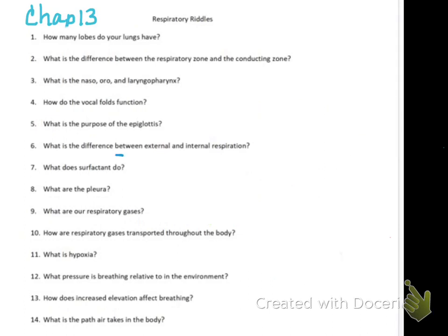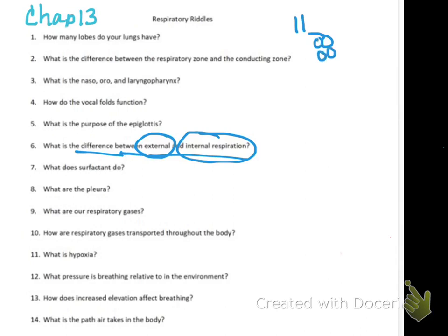The next question: what is the difference between internal and external respiration? Breathing is actually a four-step process. The first thing we have to do is physically get air into the body through the conducting zone - through the nose or mouth, pharynx, larynx, trachea, primary bronchi, secondary bronchi, bronchioles, and then to the alveoli. Here in the drawing you can see a bronchus with alveoli as little grape-like clusters.